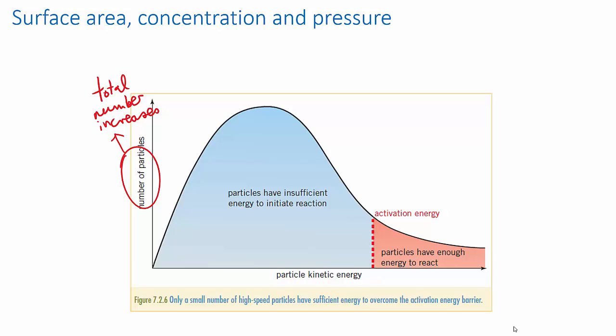Keeping all else the same, if we increase the surface area, concentration or pressure of one of the reactants, we're effectively increasing the number of reactant molecules per unit volume that are available to react. So we can redraw the distribution to show that there's more of everything, like this.